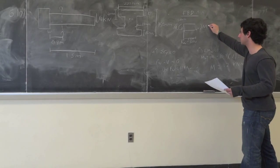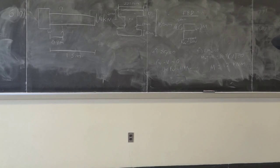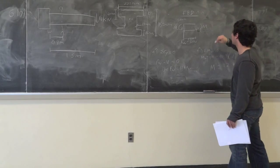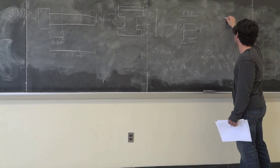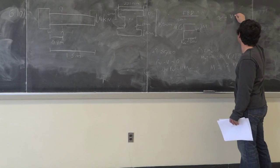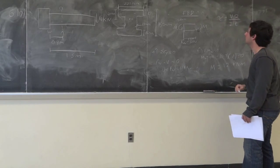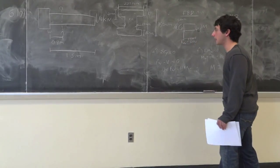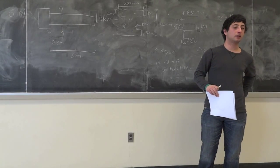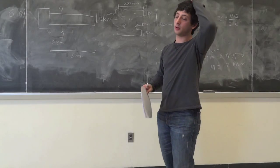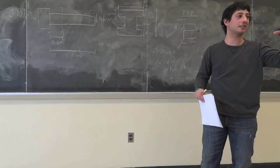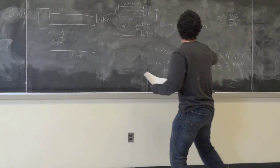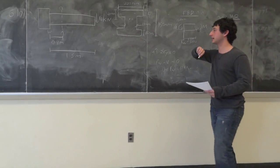Now we know the shear force V equals 10 kN in that section. The formula for transverse shear is tau equals VQ over IT. They're asking for the largest transverse shear. The largest transverse shear is always at the neutral axis — that's the key thing to understand from this chapter. For bending stress, the neutral axis is zero, but for transverse shear it's maximum at the neutral axis.